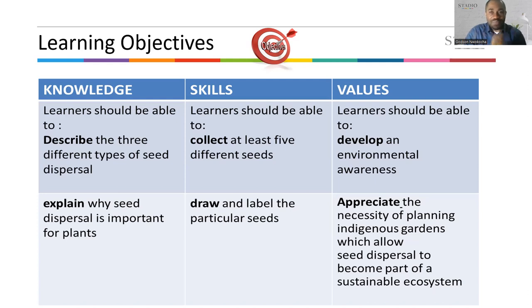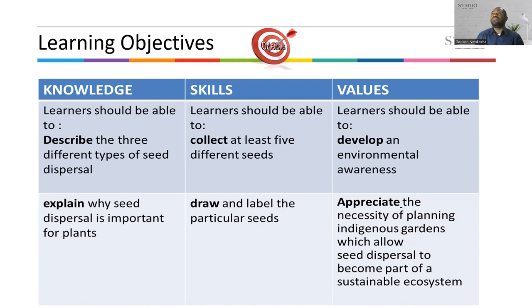Learners will be able to explain why seed dispersal is important for plants; they have the knowledge and you can judge if their explanation is correct or not. In terms of skills, 'learners will be able to collect different types of seeds' — they go into the environment and physically collect seeds, and you can measure if they collected the correct ones. 'Learners will be able to draw and label a particular seed' — you ask them to draw it and they'll be able to do it. The objectives must be measurable.